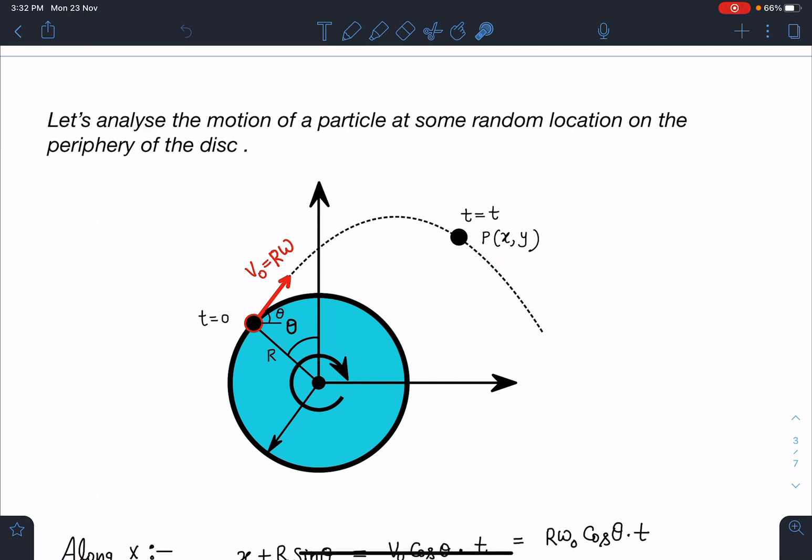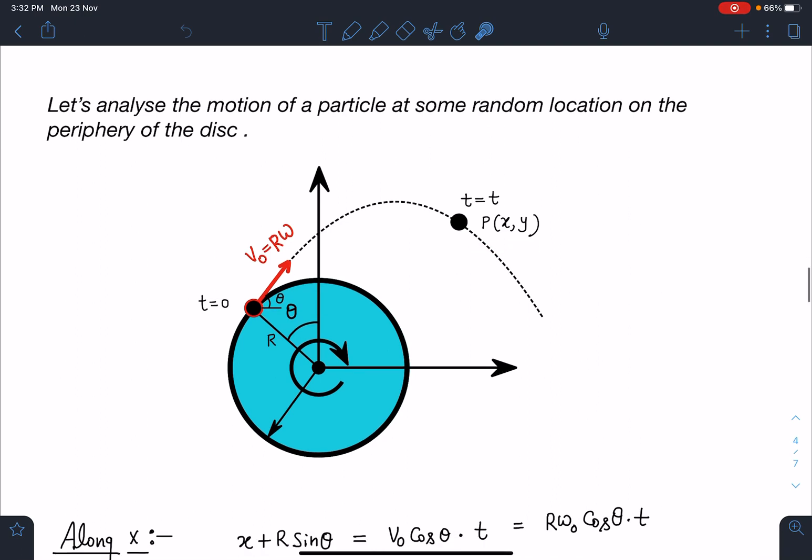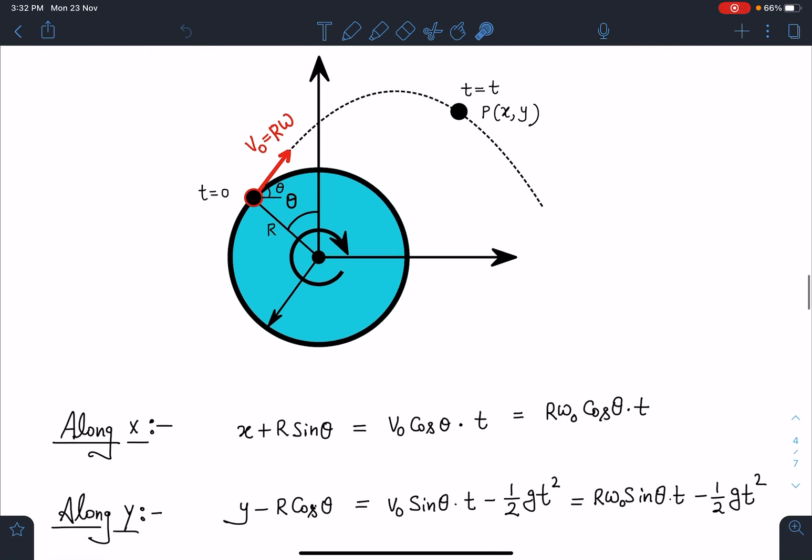At t = 0, let's say its coordinate is P(x, y) at any time t. If we analyze the motion along x, this distance is R sin θ, so R sin θ + x. Motion along x-axis has constant speed because acceleration along x is zero, so I can write v₀ cos θ × t = Rω₀ cos θ × t.